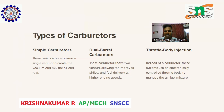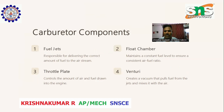Electronically controlled carburetors use an electronically controlled throttle body to manage the air-fuel mixture. Carburetor components: Fuel jets are responsible for delivering the correct amount of fuel to the air stream. The float chamber maintains a constant fuel level to ensure a consistent air-fuel ratio. Throttle plates control the amount of air and fuel drawn into the engine.